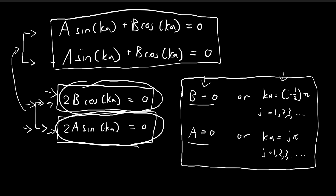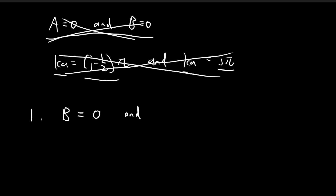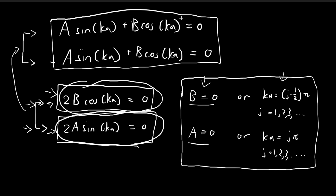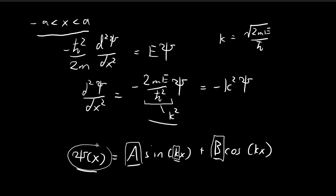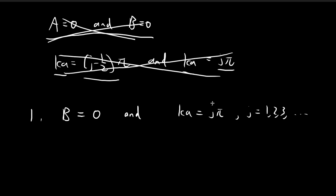The first valid scenario is B = 0 and ka = jπ, where j = 1, 2, 3, and so on. With B = 0, the first requirement 2B·cos(ka) = 0 is satisfied. With ka = jπ, sin(ka) = 0, so the second requirement is satisfied. Both conditions are met with no contradictions, making this a valid choice. We'll return to this solution later.